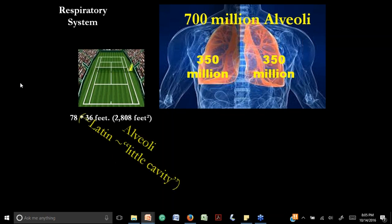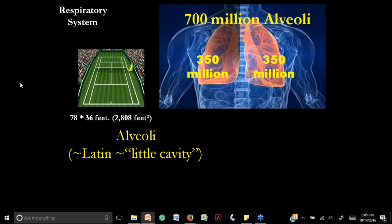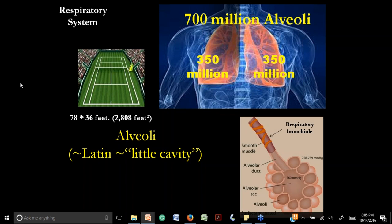What does 'alveoli' mean? In Latin, it means 'little cavity.' What is the functional unit of the lung? Some textbooks say alveoli, others say the acinus (singular) or acini (plural). Most books, including this one, refer to the acinus. The acinus is composed of the alveoli, the alveolar sac (the cavity in the alveoli), the alveolar duct, and the respiratory bronchiole. Distally to the terminal bronchiole, we have the respiratory bronchiole, and from there to the alveoli is where the acinus is composed — that is the functional unit.